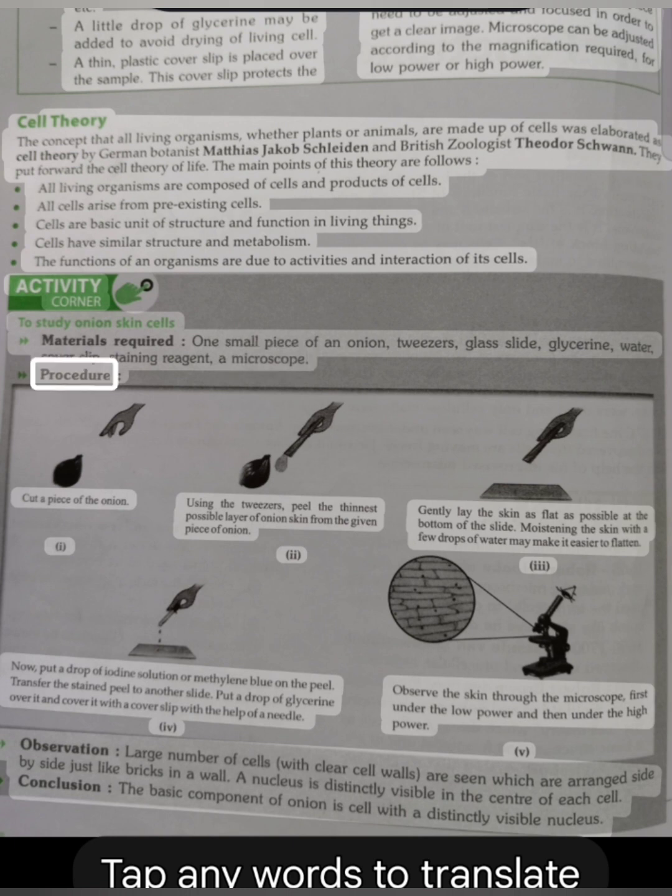Procedure: Cut a piece of the onion. I. Using the tweezers, peel the thinnest possible layer of onion skin from the given piece of onion. II. Gently lay the skin as flat as possible at the bottom of the slide. Moistening the skin with a few drops of water may make it easier to flatten. III. Now, put a drop of iodine solution or methylene blue on the peel. Transfer the stained peel to another slide. Put a drop of glycerin over it and cover it with a cover slip with the help of a needle.